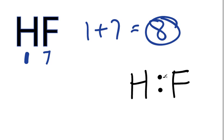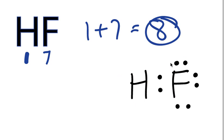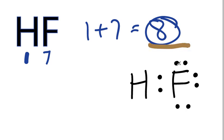So we have 8 total. We've used 2, 4, 6, 8, and it looks like the fluorine has 2, 4, 6, 8, and the hydrogen has 2. We've satisfied the octet and we've used all 8 valence electrons.